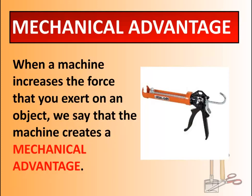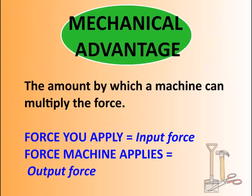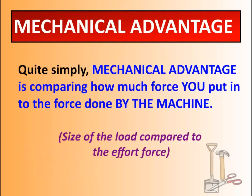Look in your notes for the box that says 'mechanical advantage.' Mechanical advantage involves two things: input force — that's the force you apply — and output force — the force the machine applies. Simply put, a mechanical advantage is comparing how much force you put in judged by the force that the machine puts in. We're comparing the size of the load compared to the size of the effort force.